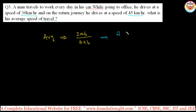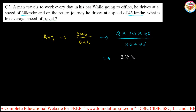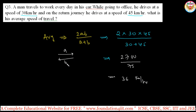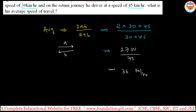So the average speed is 2 × a × b divided by (a + b), where a is the one-way speed and b is the return speed: 2 × 30 × 45 divided by (30 + 45). That gives 2700 divided by 75, which simplifies to 36 kilometers per hour. Remember, for speed-distance-time problems, average speed is 2ab / (a + b) when the same distance is covered.